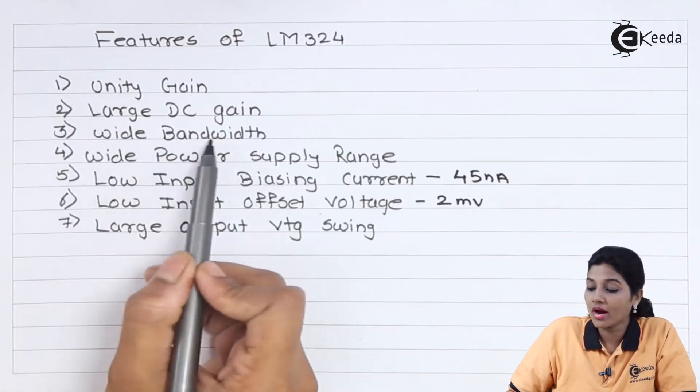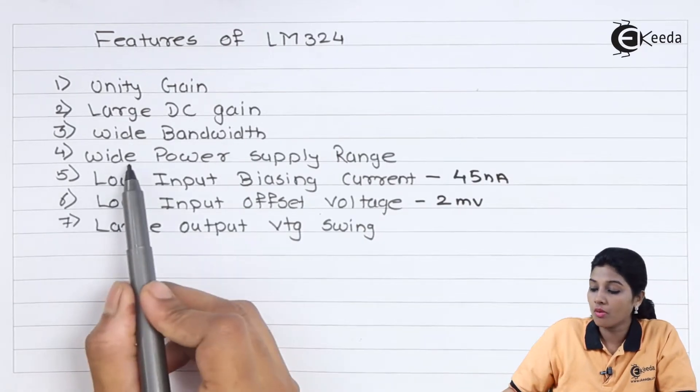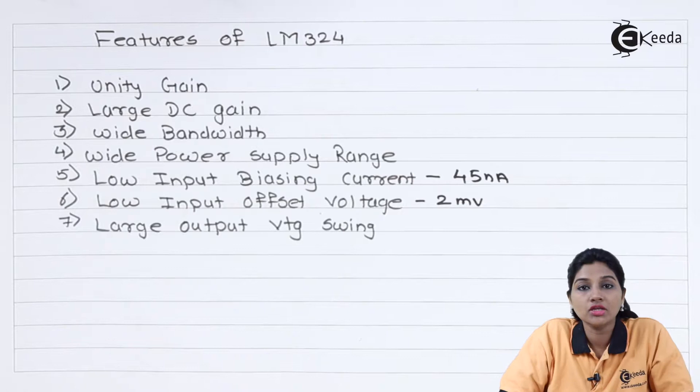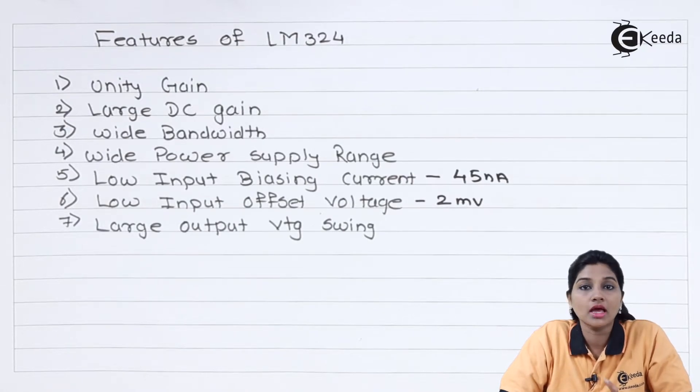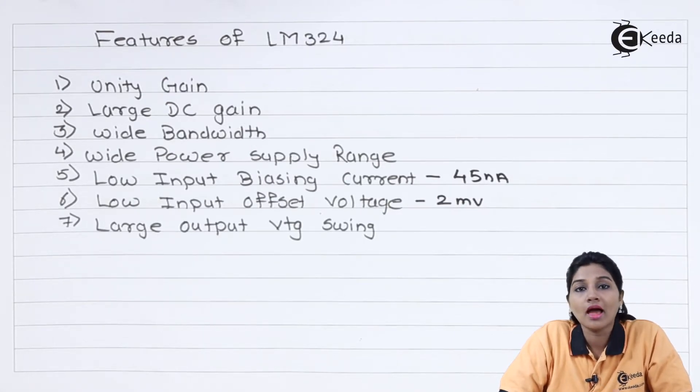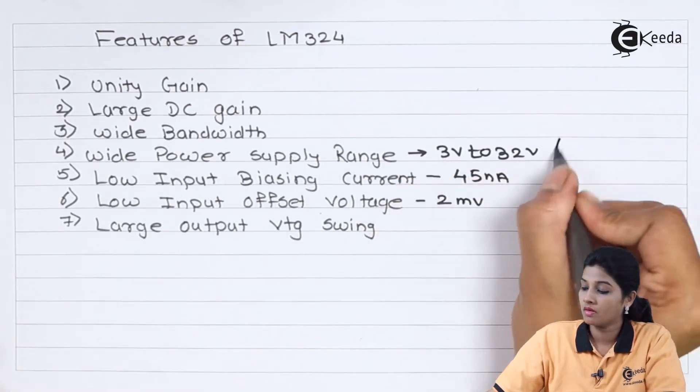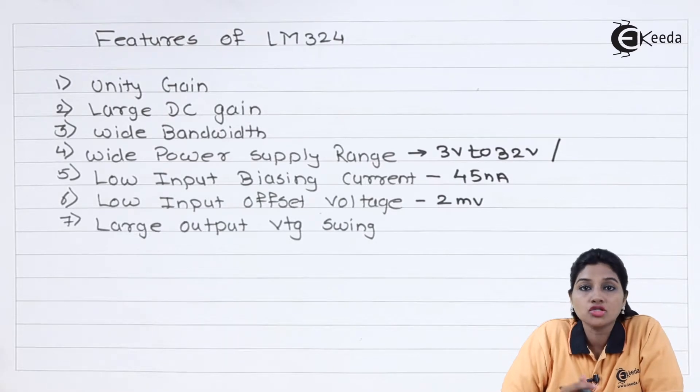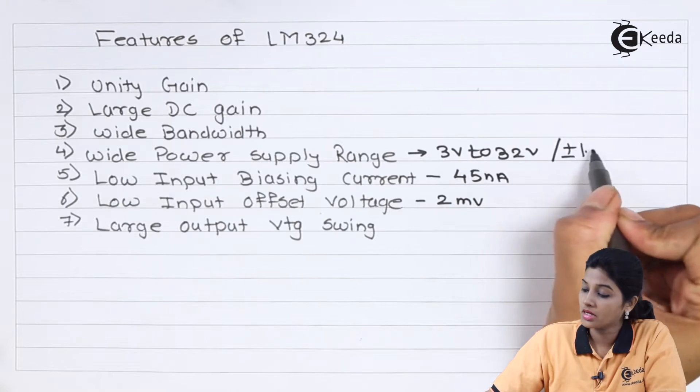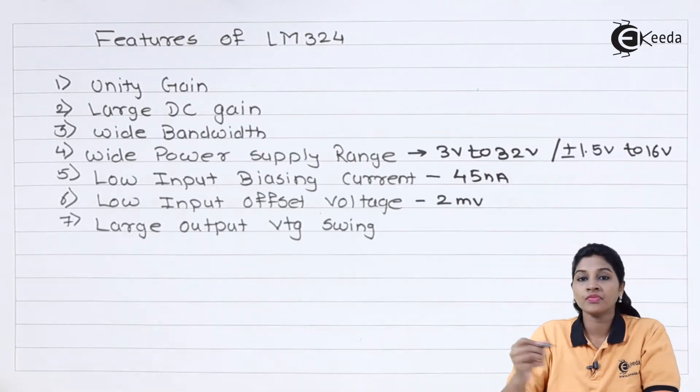Then it provides wide bandwidth which is approximately equal to 1 MHz. Next is it provides wide supply range. As we can see it has only one pin of VCC and one pin of ground. It operates on both single as well as dual power supply. The single power supply having range from 3 to 32V whereas dual power supply provides a voltage range from plus minus 1.5V to 16V.